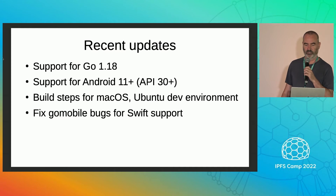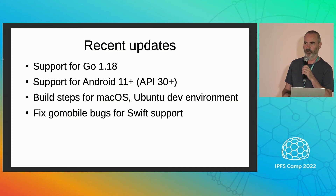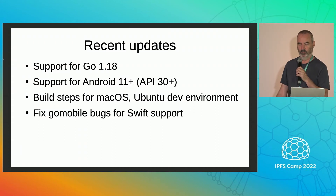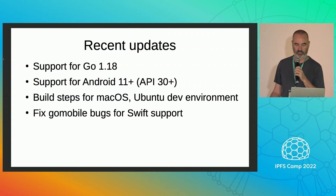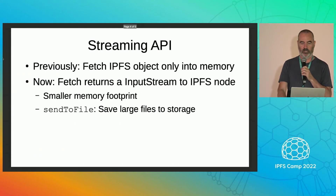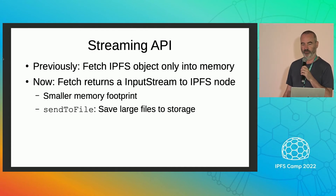We found a bug in the original Go Mobile code from Golang for Swift support, and we submitted a pull request back to their repo to fix that. We also added a streaming API.